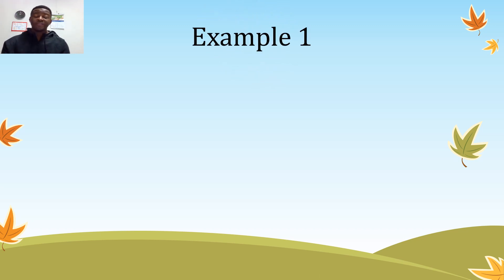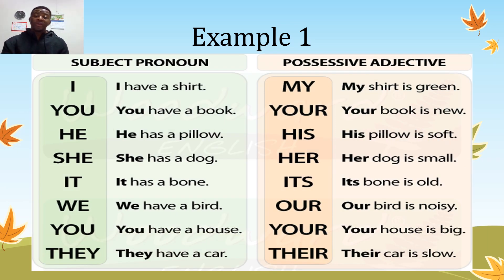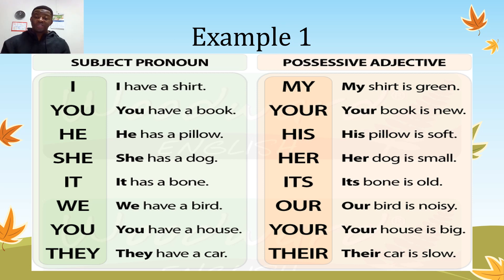Now let's consider the first example, which is between subject pronouns and possessive adjectives. I have a shirt — my shirt is green. You have a book — your book is new. It has a pillow — its pillow is soft. She has a dog — her dog is small. It has a bone — its bone is whole.